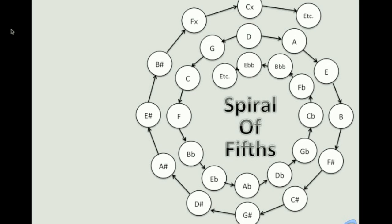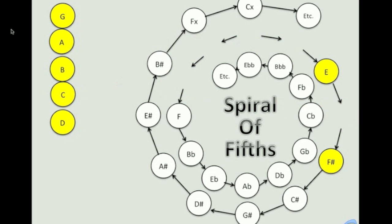Also, notice that we can derive any diatonic scale from a continuous, unbroken chain of seven fifths. For one example, the G-major diatonic scale can be generated from a chain of fifths from C to F-sharp, which rearranges to G, A, B, C, D, E, F-sharp.